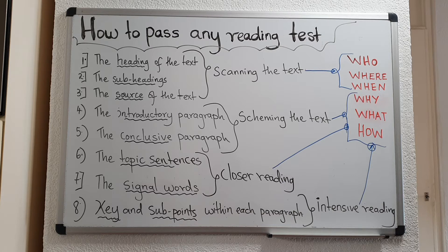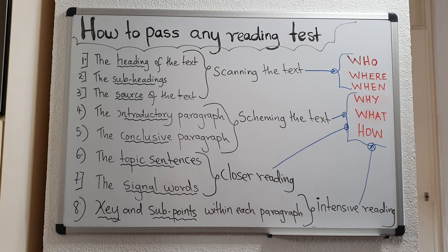Most texts have subtitles or subheadings — you can highlight those with your highlighter. And then finally, have a look at the source of the text, which is usually right at the end. For example, if it's a newspaper article, the source could be The Guardian. The source of the text tells you where the text has been derived from.